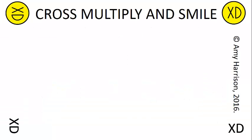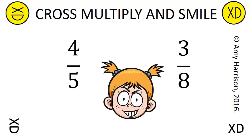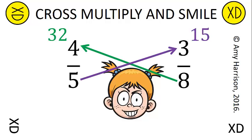To do the cross multiply and smile, first you need to start off with two fractions. Then you need to cross multiply: 8 times 4 to get 32, and 5 times 3 to get 15.